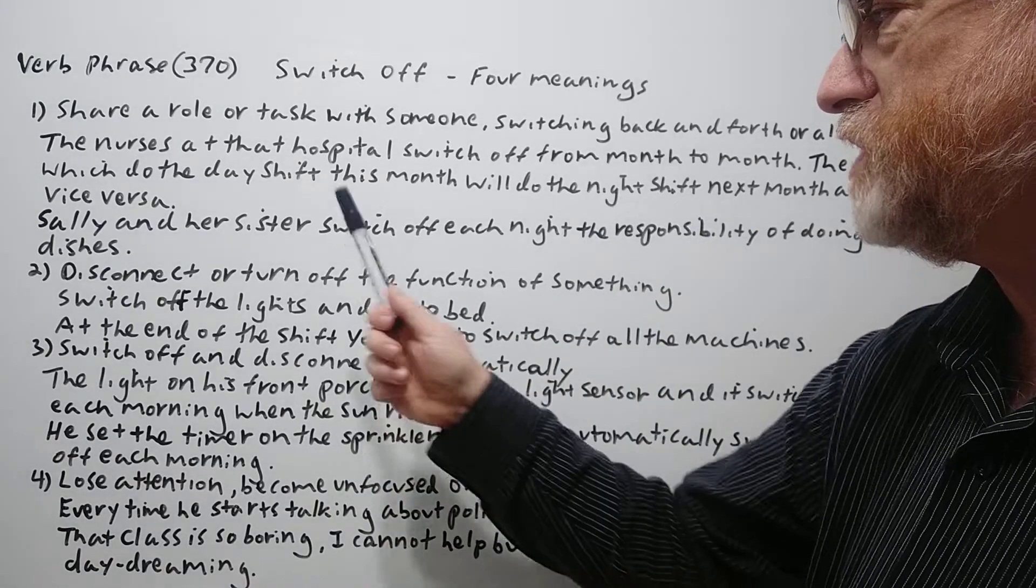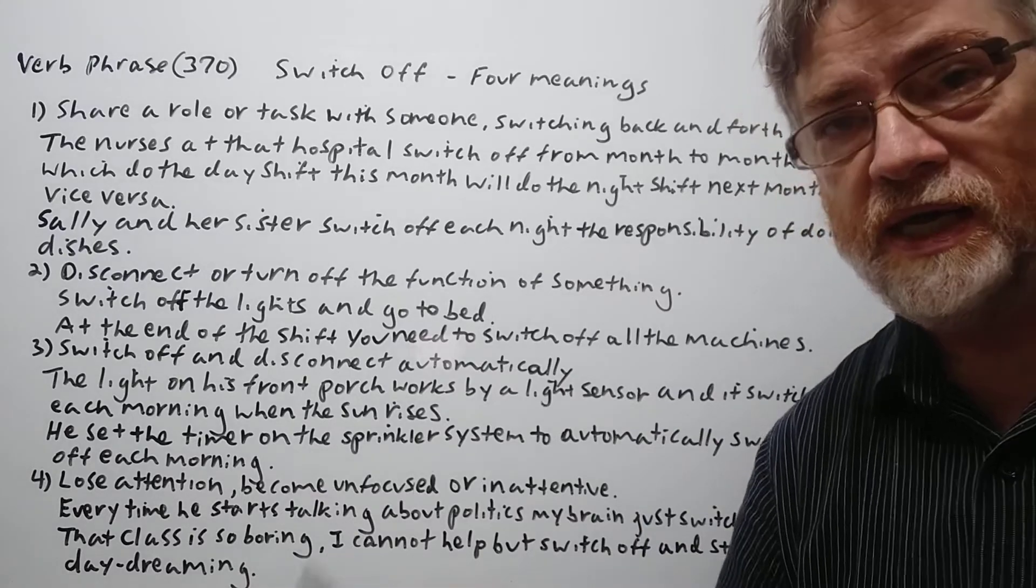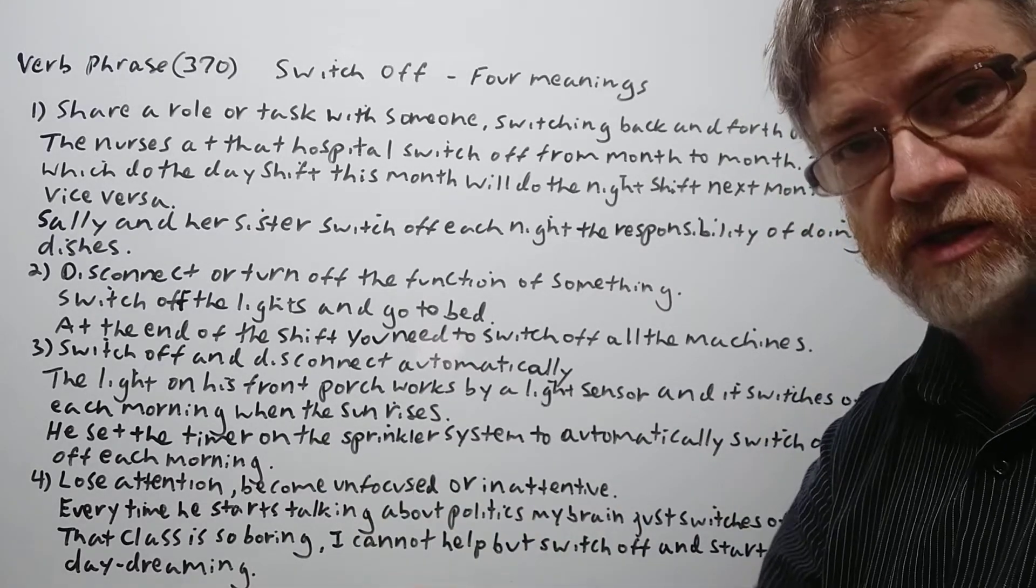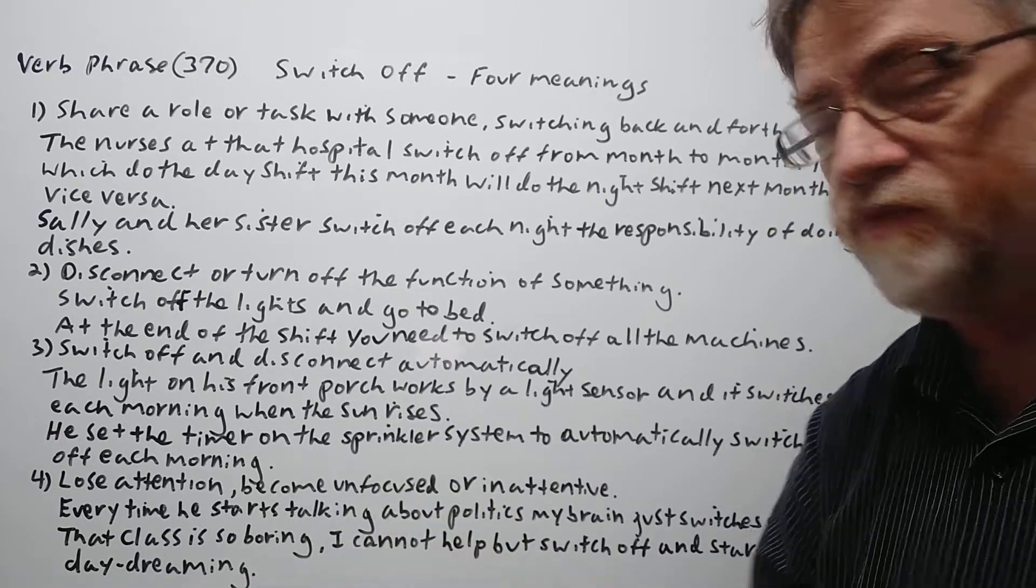And we have a second example here. Sally and her sister switch off each night the responsibility of doing the dishes. So Sally does it one night, her sister, then Sally, then her sister. So again they alternate. They switch off.